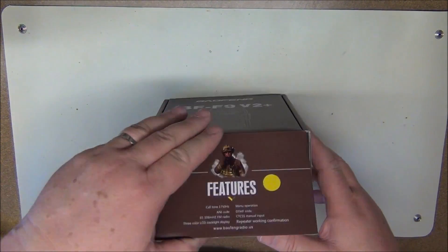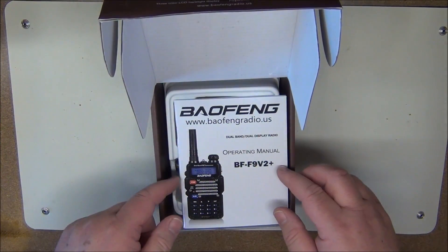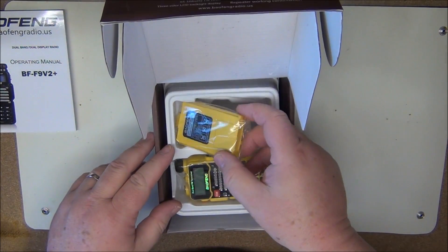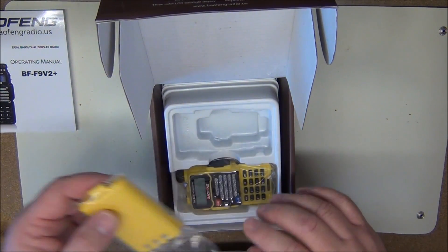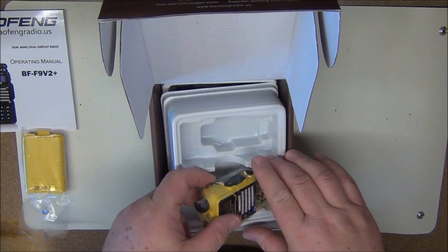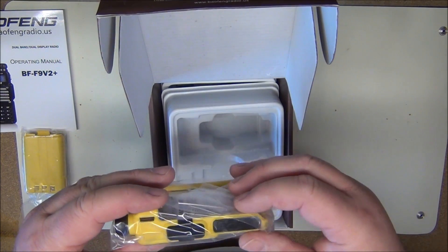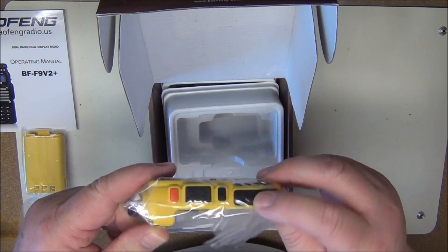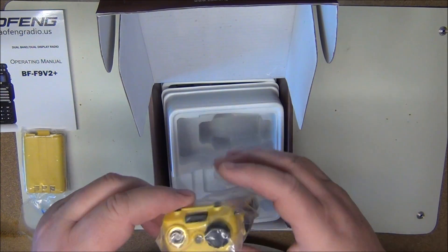So let's just go through this real quick and see if this has got all the pieces. Manual, battery, here's the radio. The previous radio was missing one of these trim pieces. This appears to have both of them.